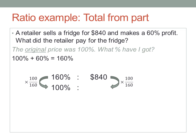840 times 100 over 160 is — with a calculator — $525. The retailer paid $525 for the fridge. Can we check that answer? Well, what's 60% of $525?